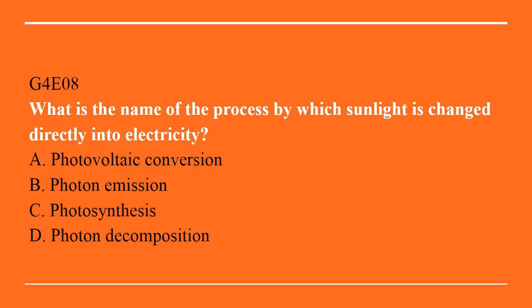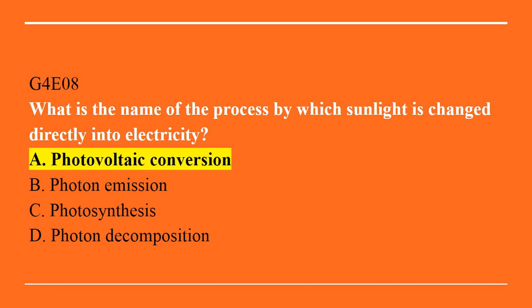G4E08: What is the name of the process by which sunlight is changed directly into electricity? A. Photovoltaic conversion. B. Photon emission. C. Photosynthesis. Or D. Photon decomposition. Correct answer is A. Photovoltaic conversion.